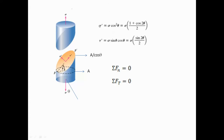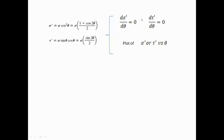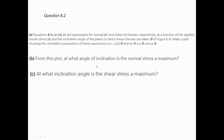Now we have the two equations and want to determine at what angle theta the normal stress is maximum and at what angle the shear stress is maximum. The first method is to take the derivative of each equation with respect to theta and set it equal to zero to find the extremum. The second method is to use the plot — which is what we are asked to do here.